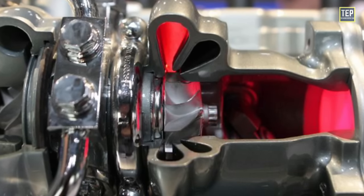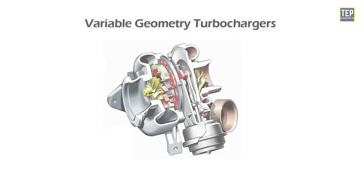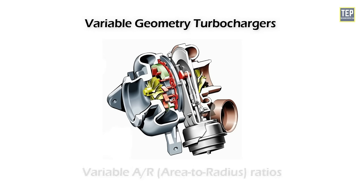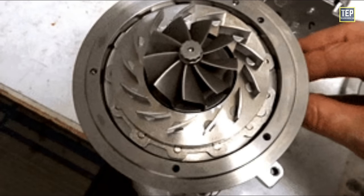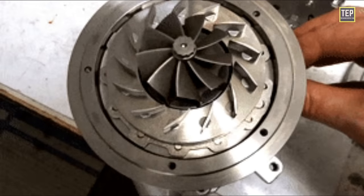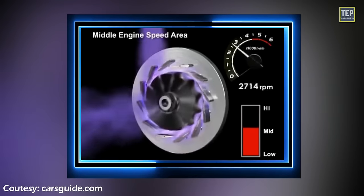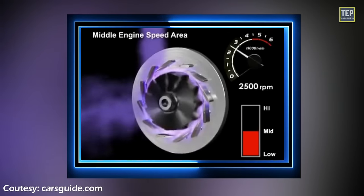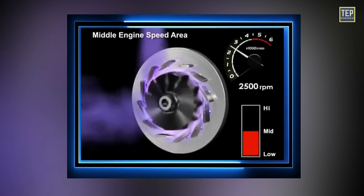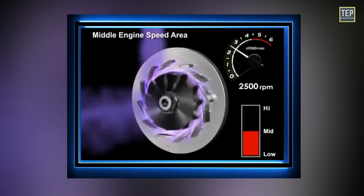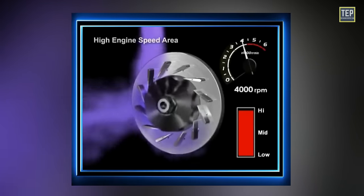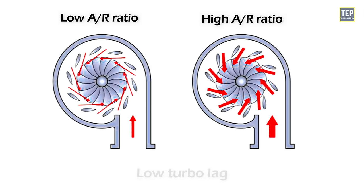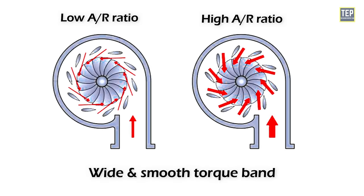Variable geometry turbochargers feature variable A/R ratios: internal vanes within the turbocharger alter the area-to-radius ratio to match the RPM. At low RPM, a low air ratio is used to increase exhaust gas velocity and quickly spool up the turbocharger. As the revs climb, the air ratio increases to allow for increased airflow. The result is low turbo lag, a low boost threshold, and a wide and smooth torque band.